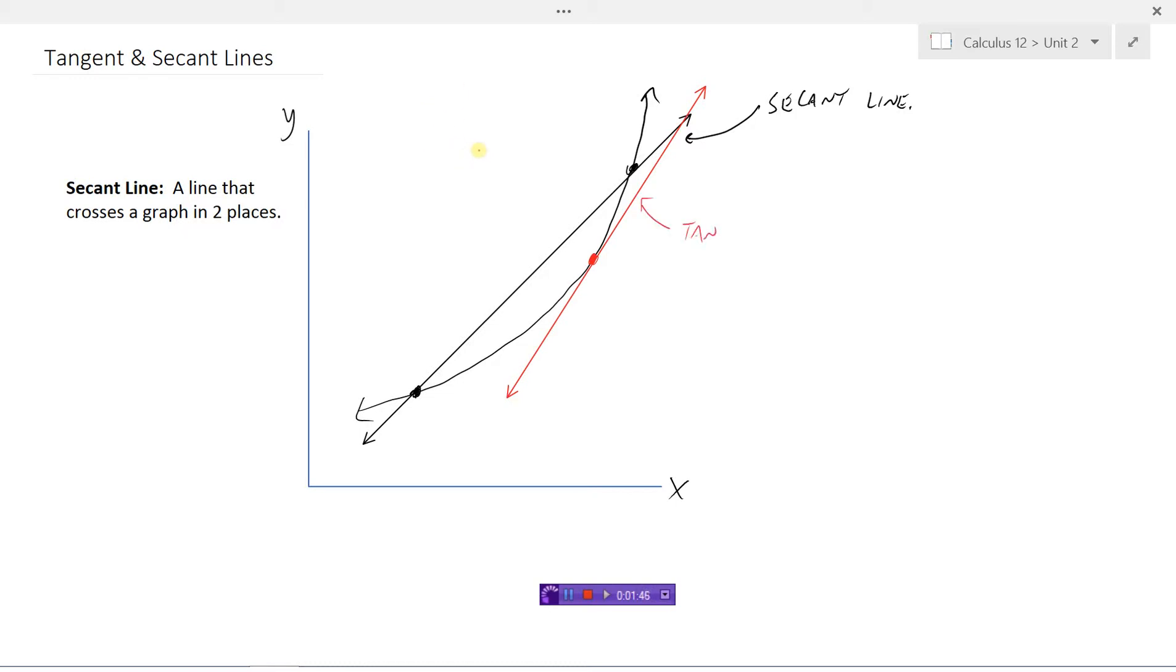The red one we call a tangent line. So the tangent line is a line that touches a curve at exactly one point. It doesn't go straight across the line, it just kind of nicks the curve as it glances by the graph. That's a tangent line.